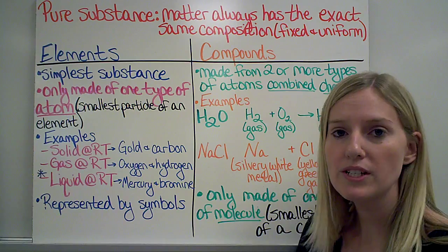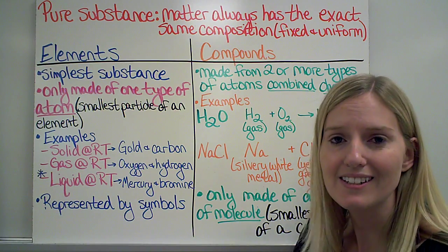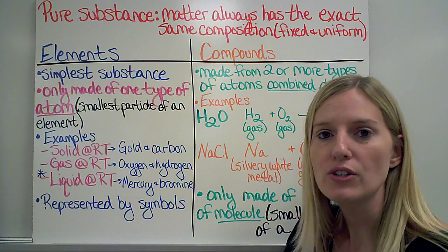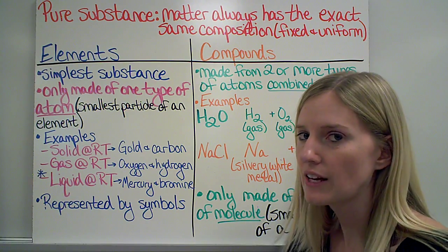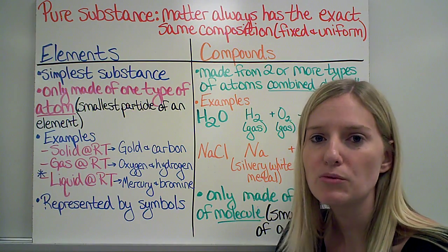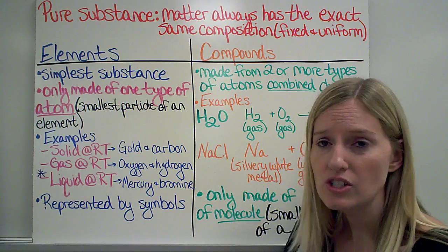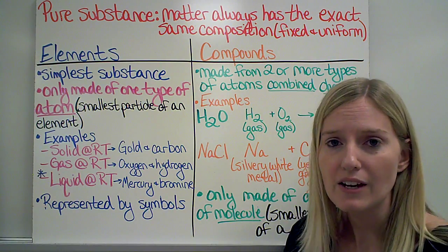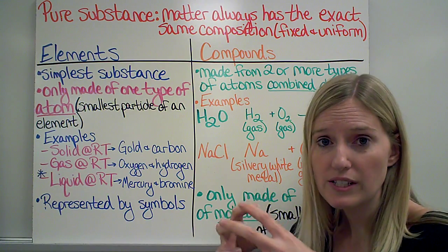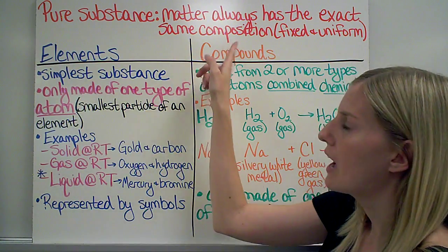So to go into more depth, our pure substances are going to be any matter that always has the exact same composition. So it's always going to be a certain number of protons, a certain number of neutrons, a certain number of electrons, or it's going to be certain elements combined in the same ratio all the time. So a fixed composition means that it doesn't change, and a uniform composition means that no matter how big or how small that pure substance is, the composition is always the same throughout that substance.